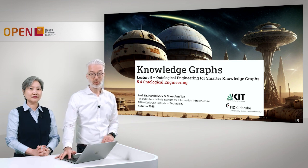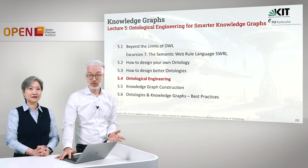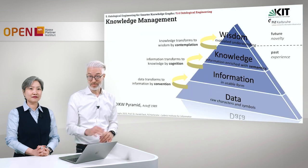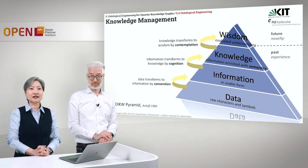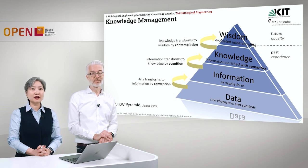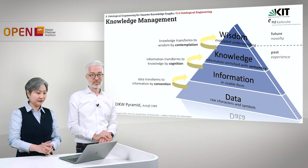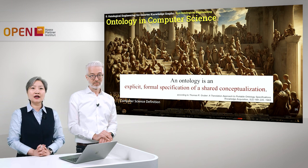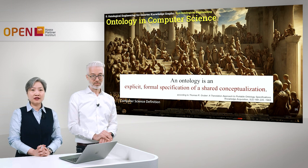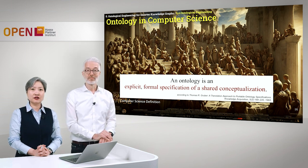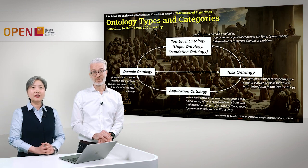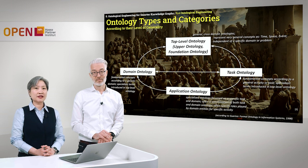In this section of the lecture, we are going to talk about ontological engineering, and we are going to start with something that you already know. Let's recall the DIKW pyramid of knowledge management. At the bottom we have data, information, and now we're on the knowledge level. This is where we enrich the information with semantics, and we do this by means of ontology. As already defined in the previous lectures, an ontology in computer science is an explicit formal specification of a shared conceptualization. Depending on the level of generality, there are several ontology types and categories.